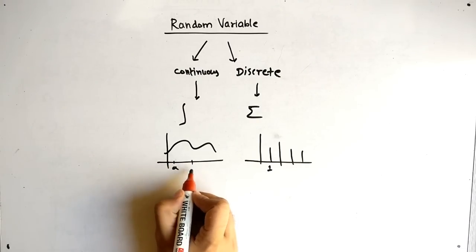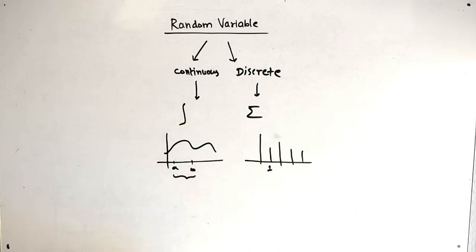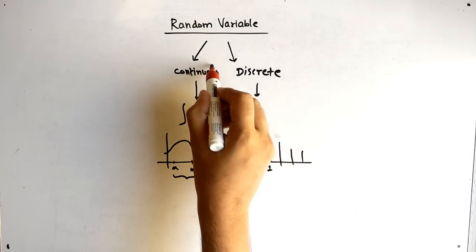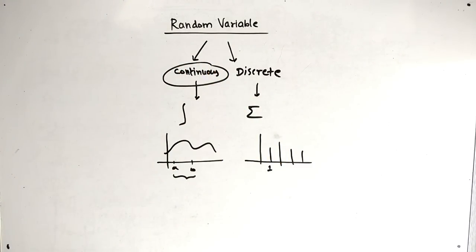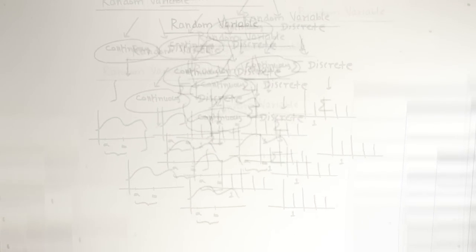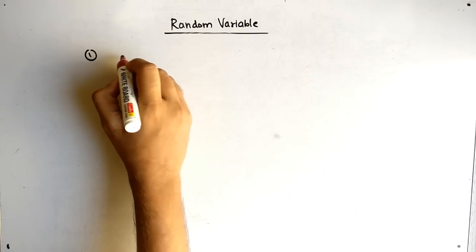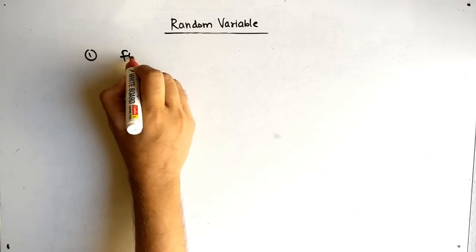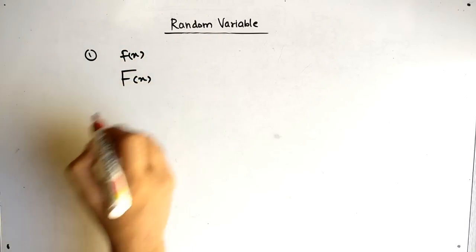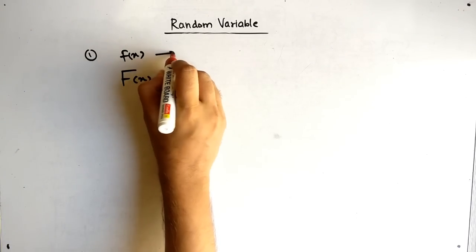In continuous, there is no particular interval — it is always a range, like a to b. Today in this video we will deal with continuous random variables and see how many types of sums there are and how to solve them. Before solving any sum, we have to understand some basics.